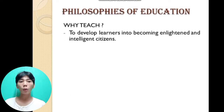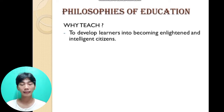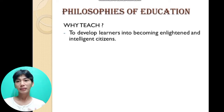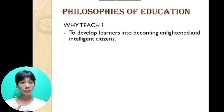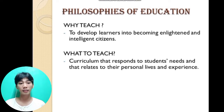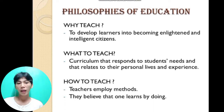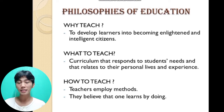The goal of progressivism is to develop learners into becoming enlightened and intelligent citizens. What to teach: a curriculum that responds to students' needs and relates to their personal lives and experiences. How to teach: teachers use methods based on the belief that one learns by doing.